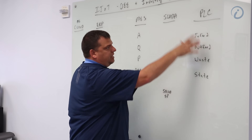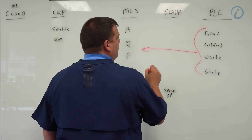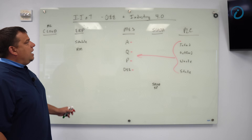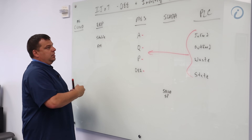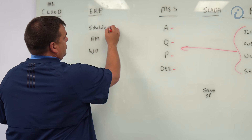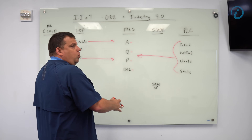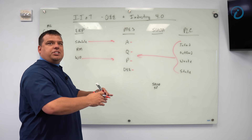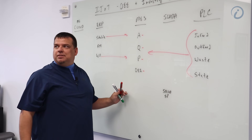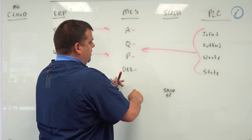You may have the operator tell you what the state is, but ideally it's coming from the equipment. So what happens right now is these values are fed into the MES system to calculate availability, quality, performance, and OEE. The MES system gets the work order and schedule from the ERP system, so the production supervisor or line operator knows what they're supposed to be running and when.